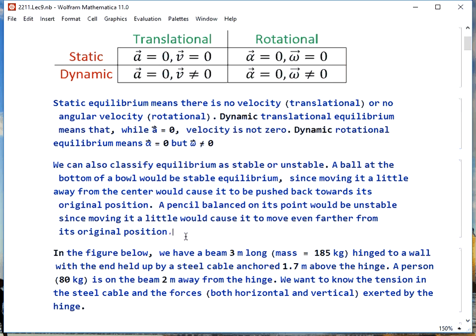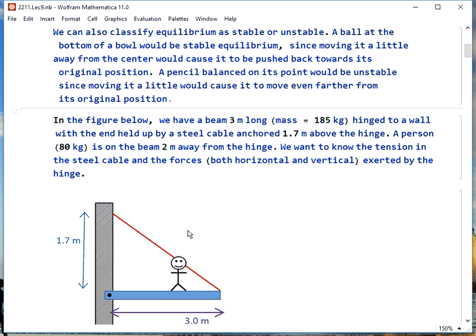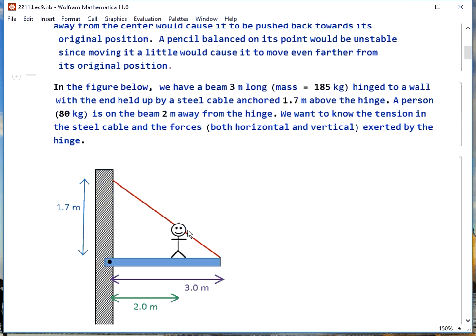So this is really nothing that you haven't already done in previous chapters, except now we're just restricting F equals Ma to zero, and torque equals I alpha will also be zero, the sum of the torques. So really, it's just going to be a bunch of examples of this, and there are a few that you see in every book, and below here is one of them.